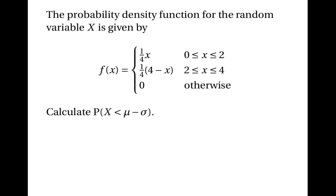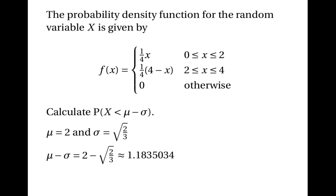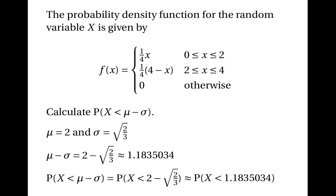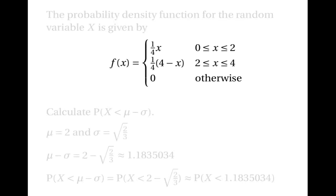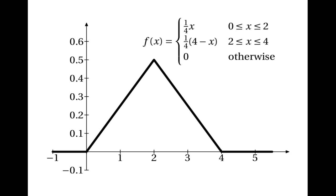Let's look at one more question using the same random variable. We want to calculate the probability that X is less than the mean minus the standard deviation. The mean is 2 and the standard deviation is √(2/3), so the mean minus the standard deviation is 2 − √(2/3) ≈ 1.1835034. Because the graph of the PDF is made up of straight lines, it's easier to work out the area of basic geometric shapes rather than integrating.